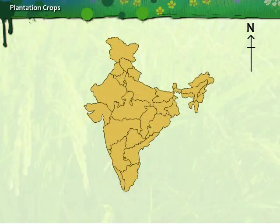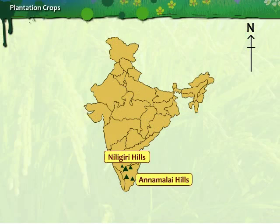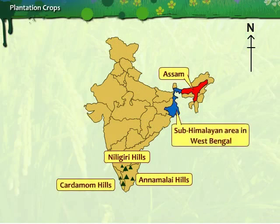Plantation agriculture is mainly practiced in the Nilgiris, Anamalai Hills and Cardamom Hills in South India, Assam and the Sub-Himalayan area in West Bengal.